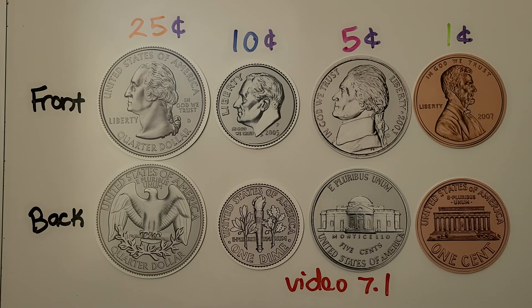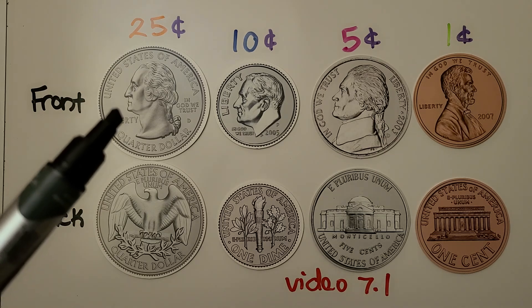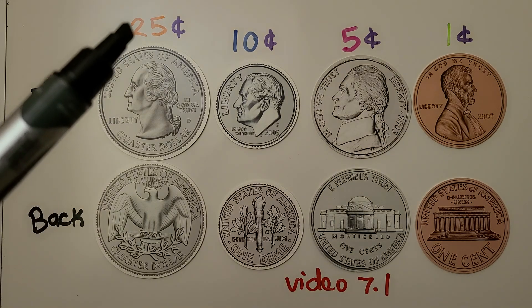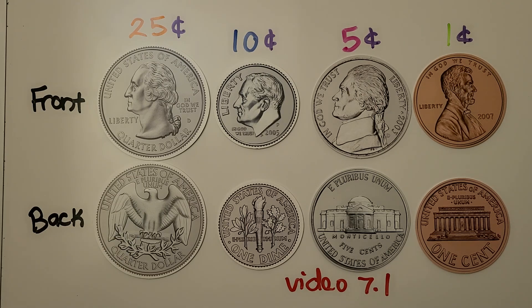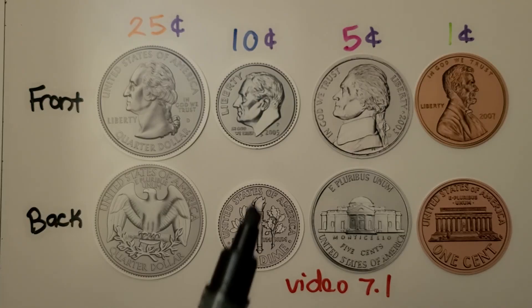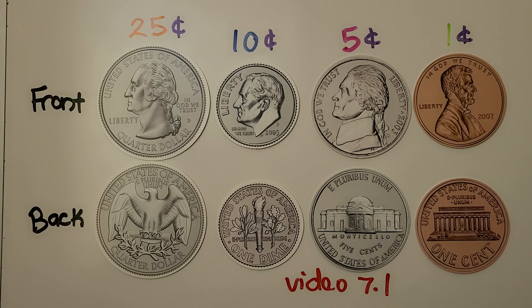So a quarter — this is the front — is worth 25 cents. And here's its back. We learned in video 7.1 that a dime, that's the front, that's the back, has the value of 10 cents.